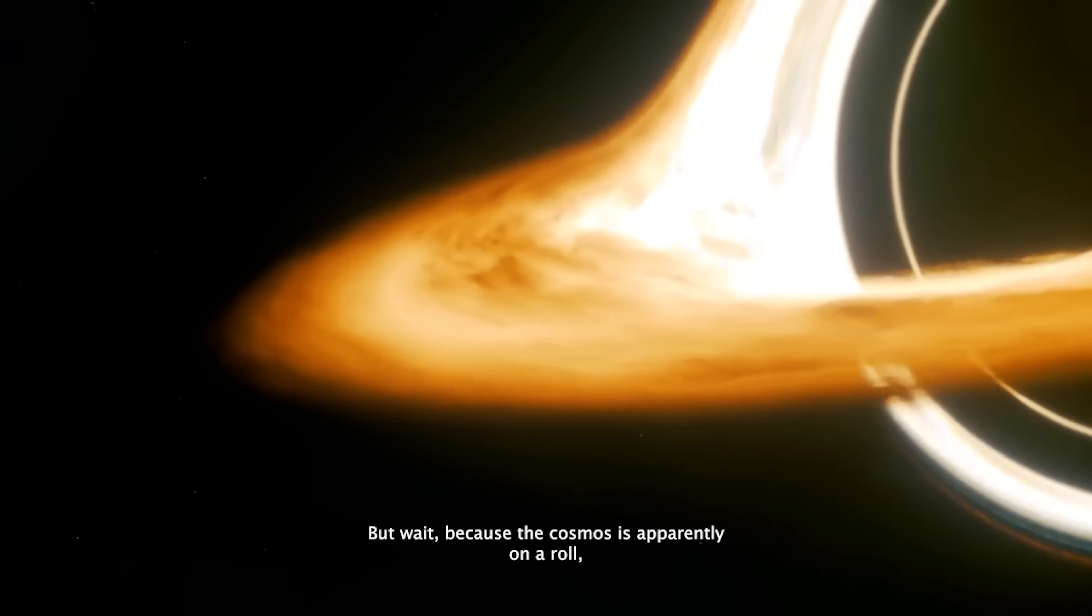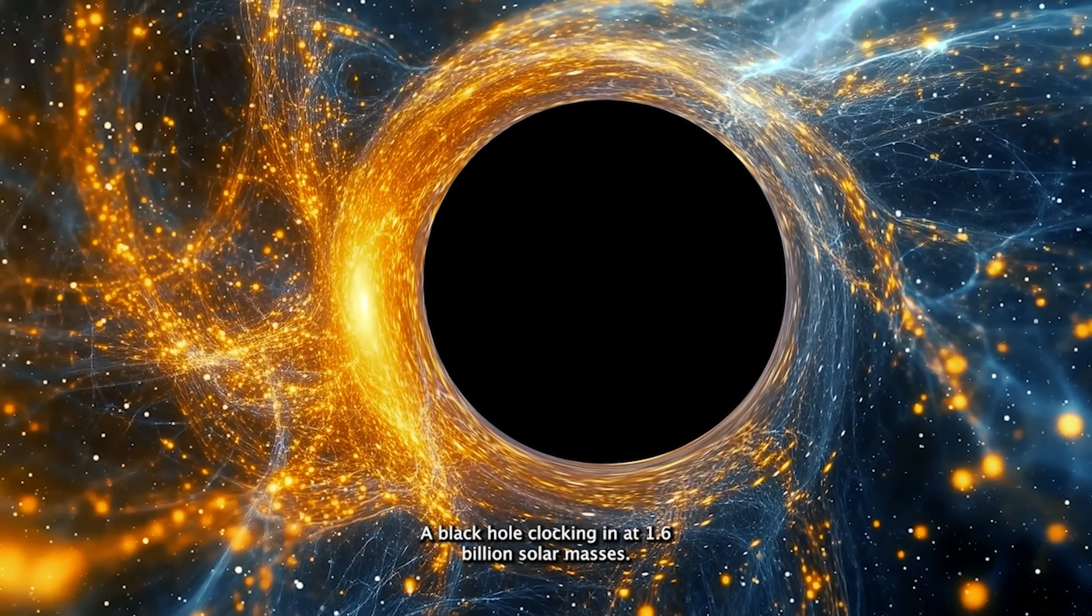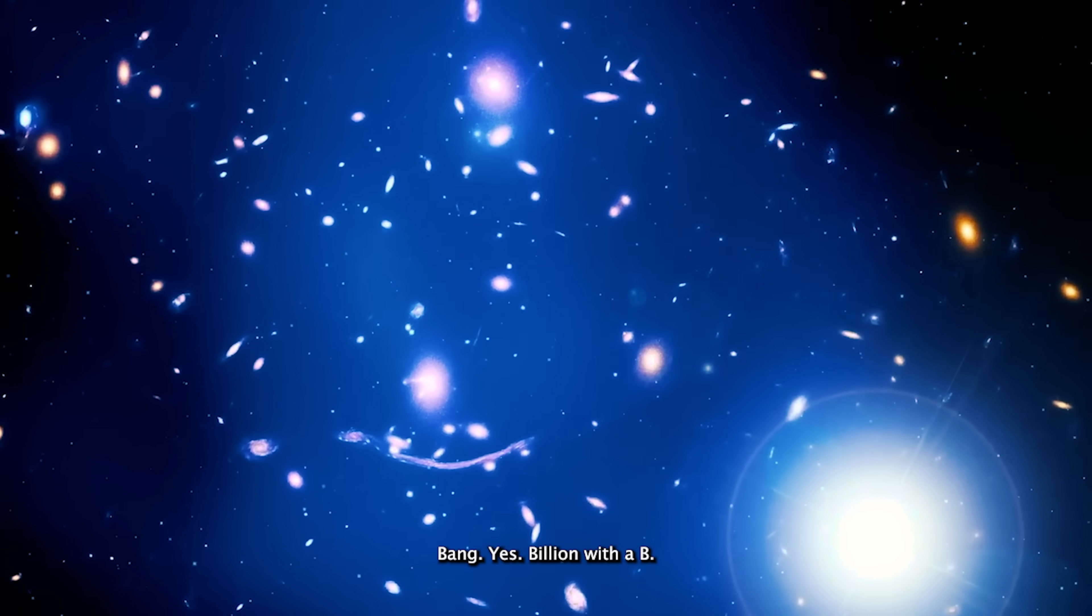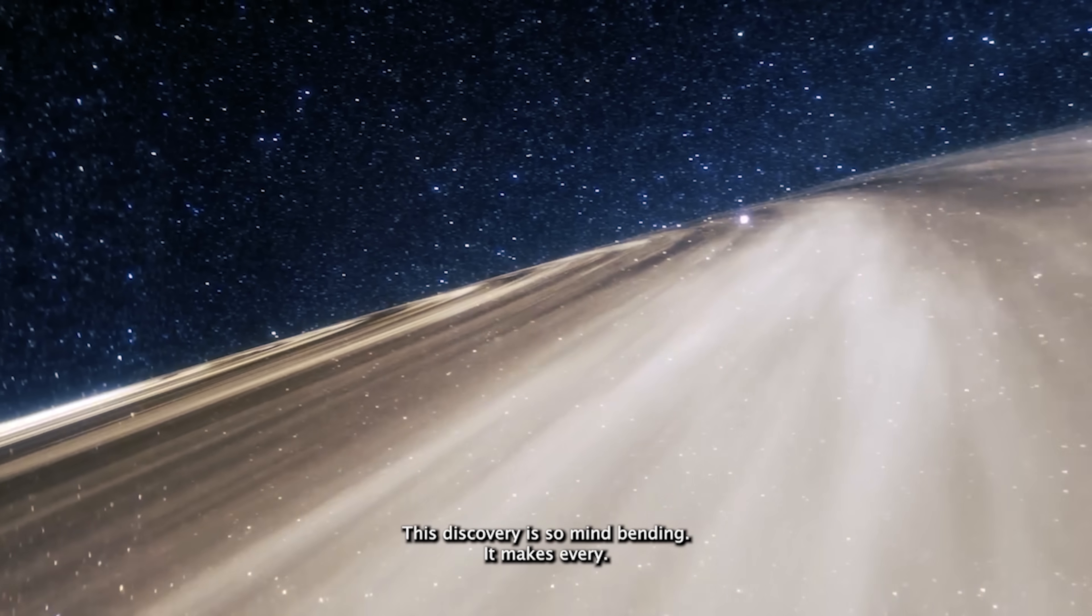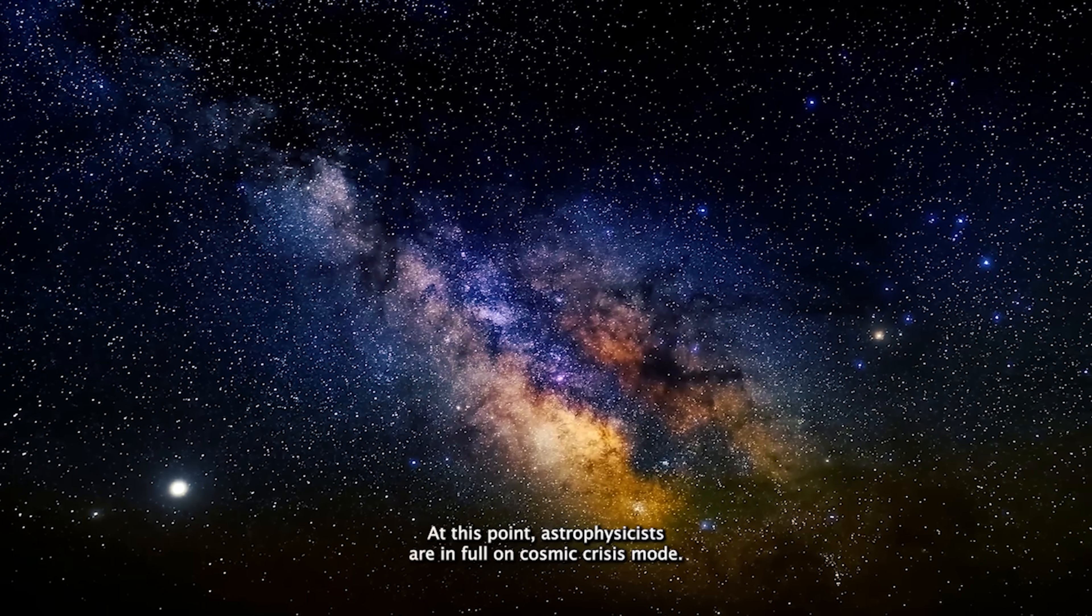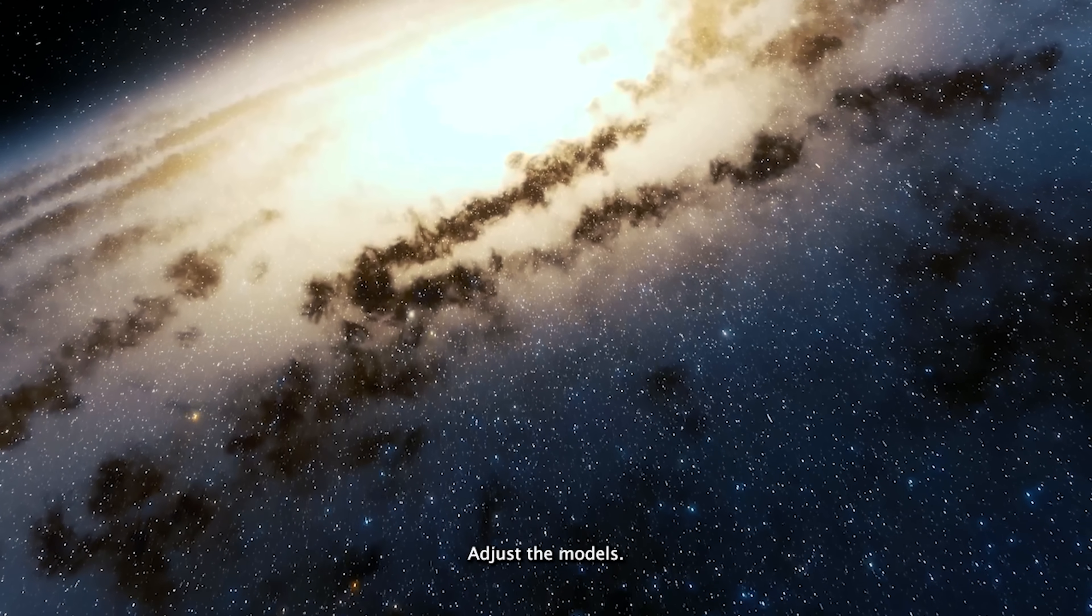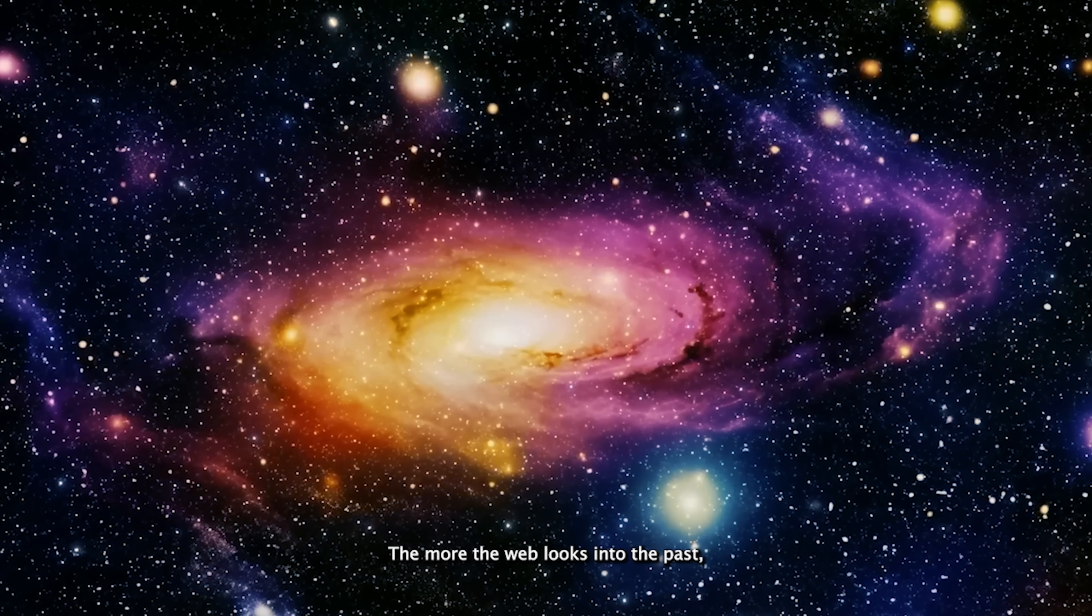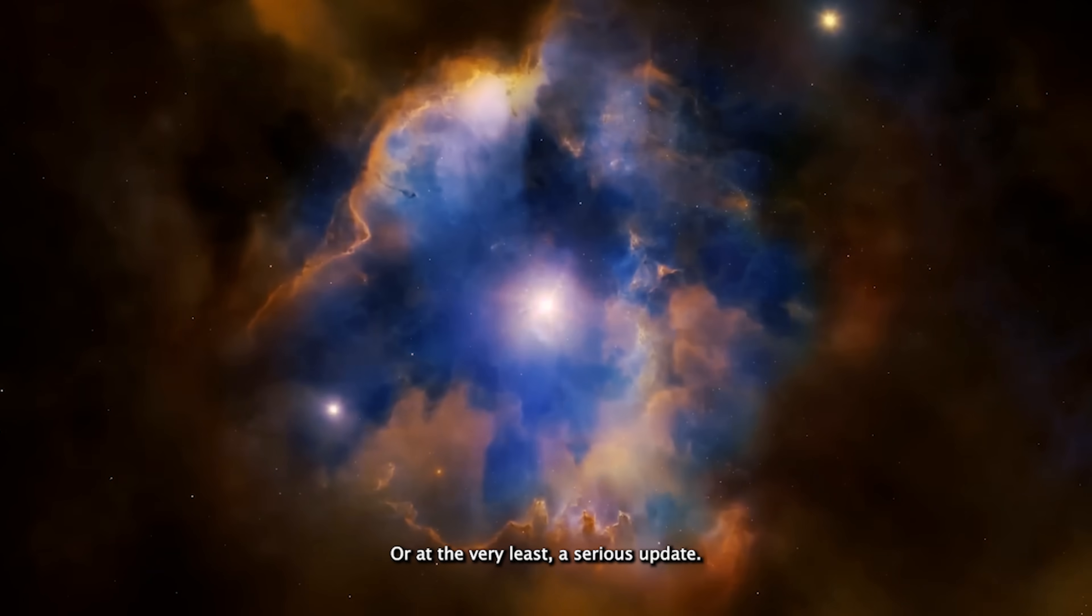But wait, because the cosmos is apparently on a roll, another team of researchers just dropped an even bigger bombshell. A black hole clocking in at 1.6 billion solar masses, only 690 million years post-bang. Yes, billion with a B. This discovery is so mind-bending, it makes every, well, maybe the Eddington limit can be tweaked theory look like a napkin doodle from a science fair. At this point, astrophysicists are in full-on cosmic crisis mode. Adjust the models? Rethink the laws? Rip up the textbooks? All options are on the table. The more the Webb looks into the past, the more it seems like the whole Big Bang narrative might need a reboot, or at the very least a serious update.